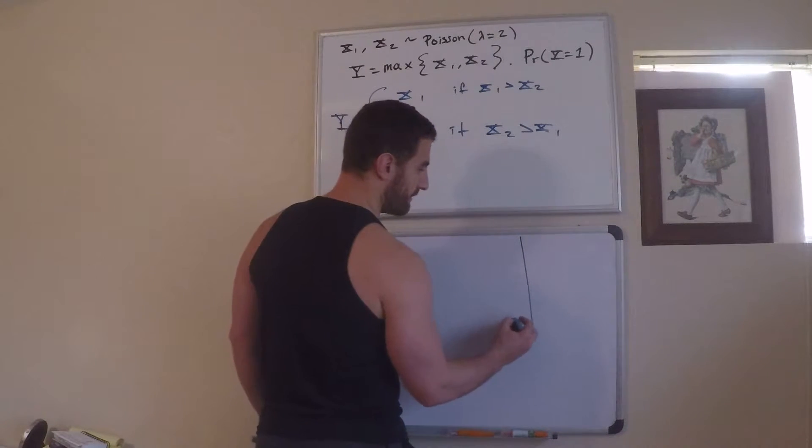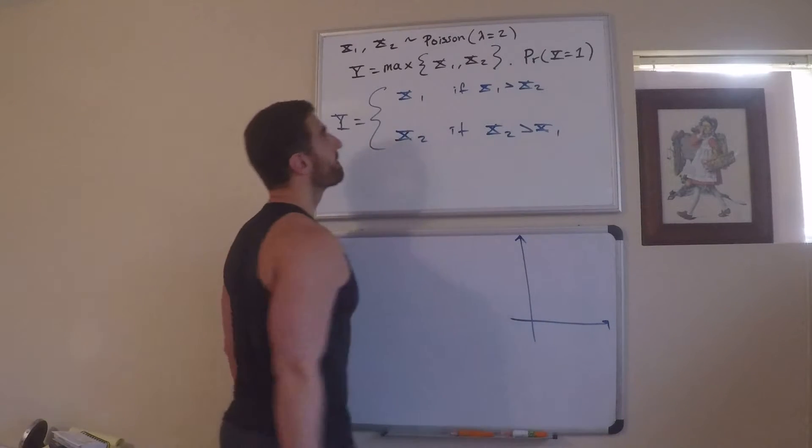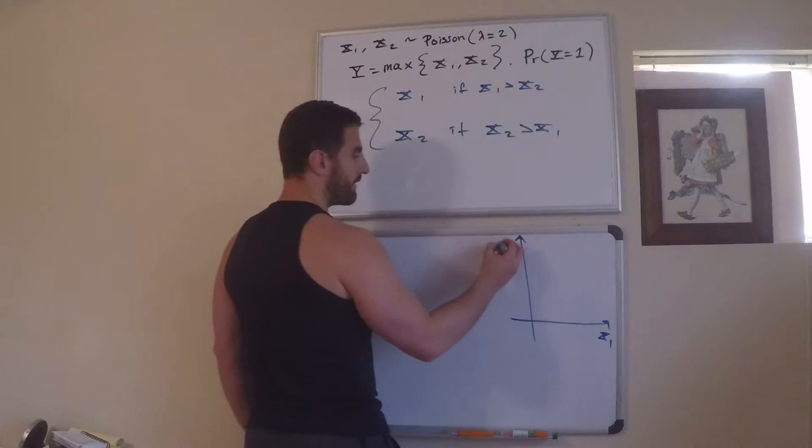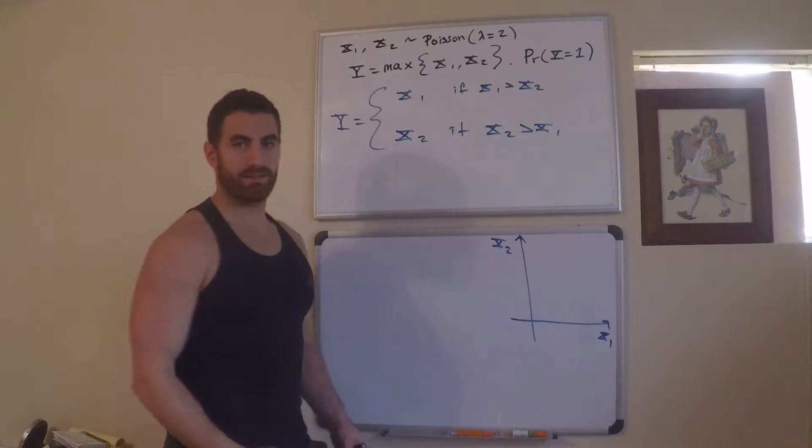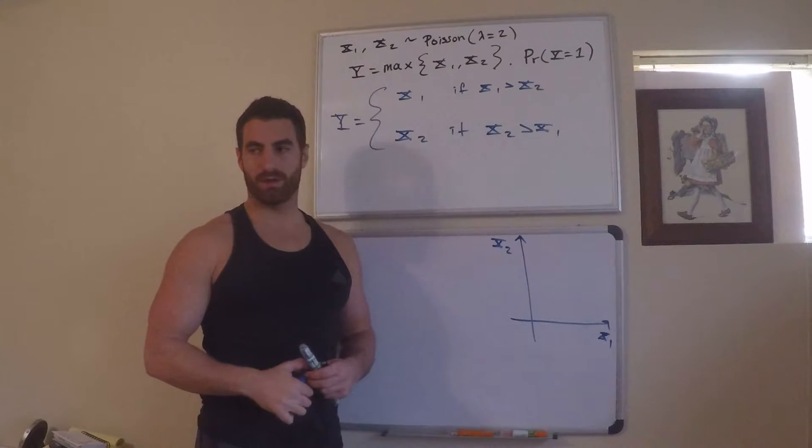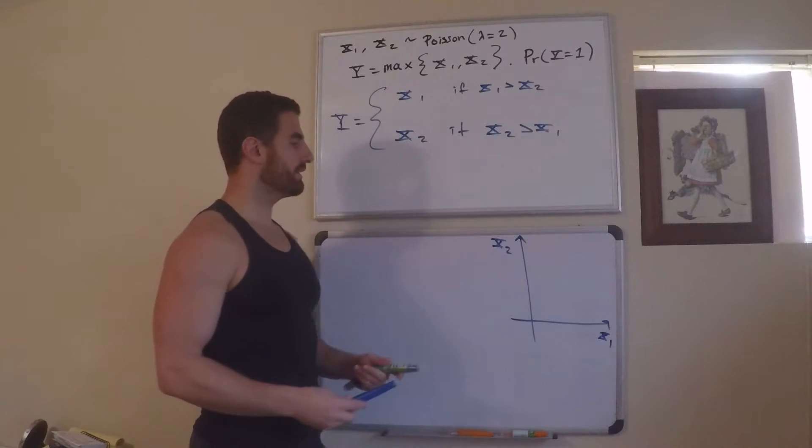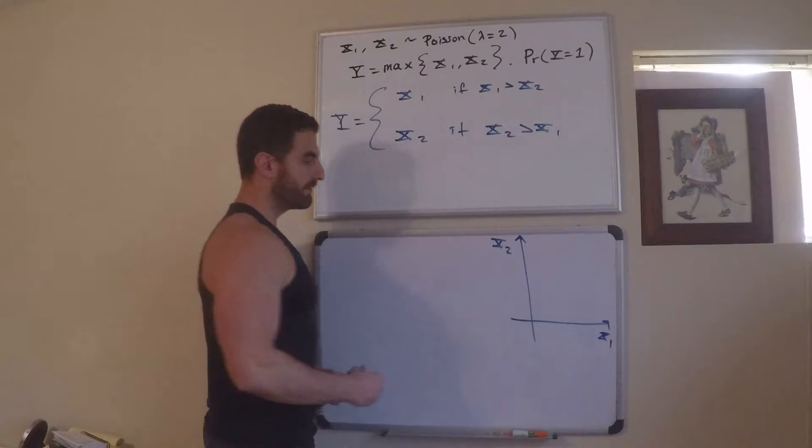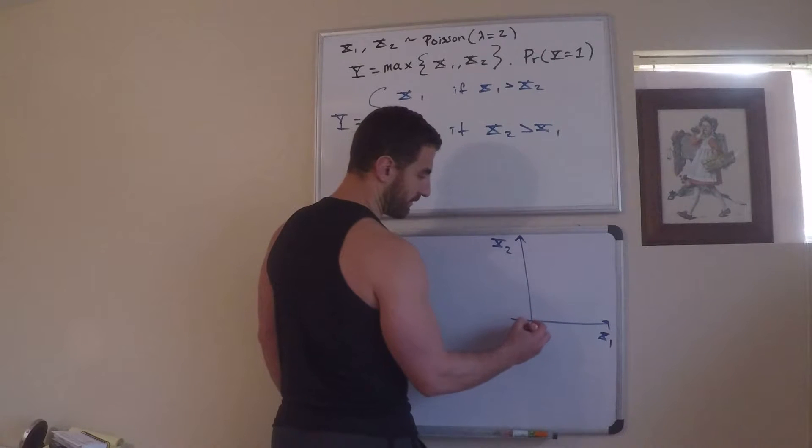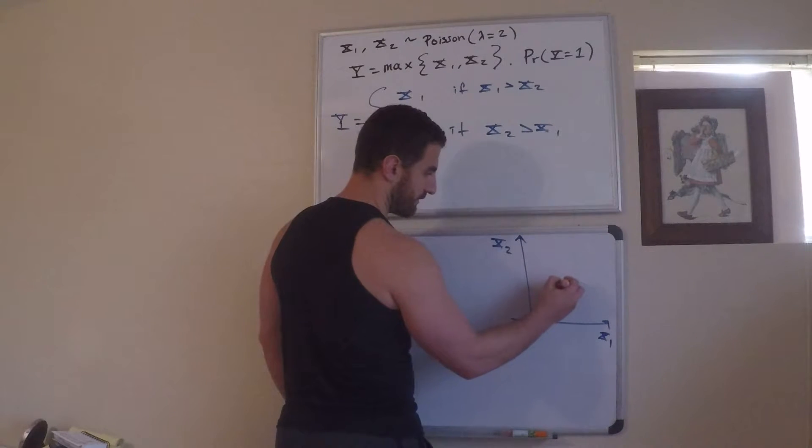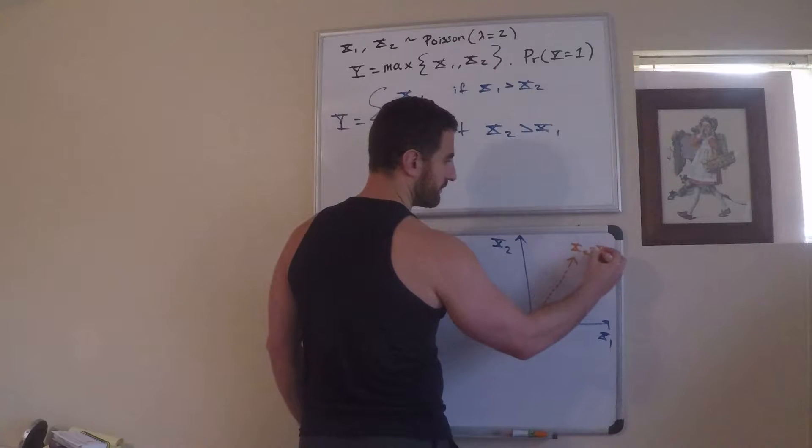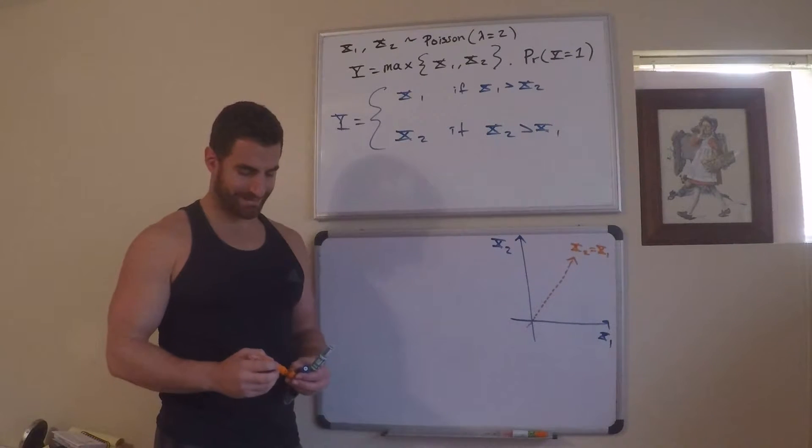We have Poisson random variables, and if you just think about the values in which a Poisson random variable can take on, it has to be positive 0, 1, 2, 3, 4, discrete distribution, right? The first thing I want to do is I want to draw the line where x1 equals x2. So bisects this quadrant. This is x2 equals x1.